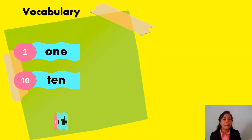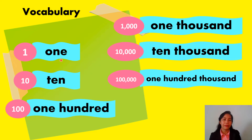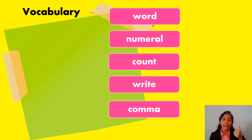For our vocabulary, let's read each word two times. One, ten, one hundred, one thousand, ten thousand, one hundred thousand. Word, numeral, count, right, comma.